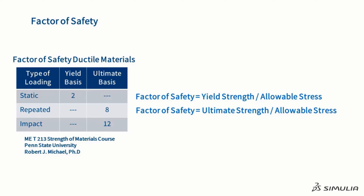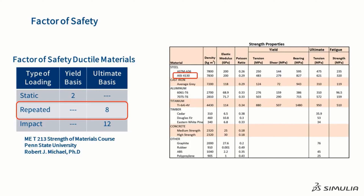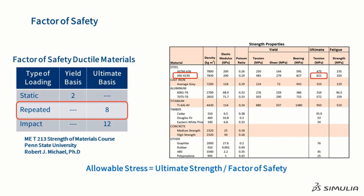This is the case for repeated loading. We have borrowed the recommended factor of safeties from Dr. Michael's Strength of Materials course notes. This is best demonstrated using an example. We will design a part using 4130 steel that is subjected to a repeated load. Using the definition of the factor of safety, we can solve for the allowable stress. So, the allowable stress is 77.6 MPa.